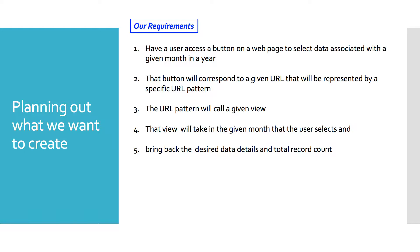That button will correspond to a given URL in our browser, represented by a specific URL pattern in our urls.py file. The URL pattern will then call our view, and that view will take in the given month that the user selects and bring back the data set with the details as well as the total record count.